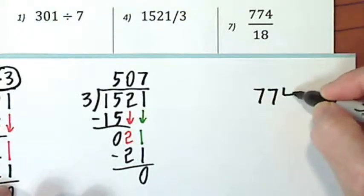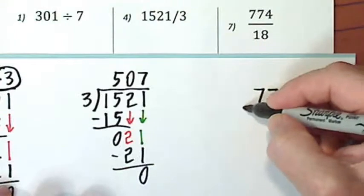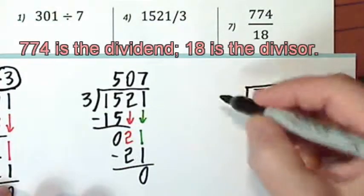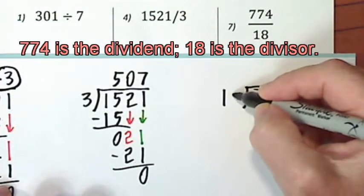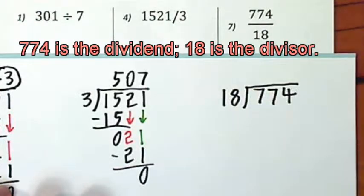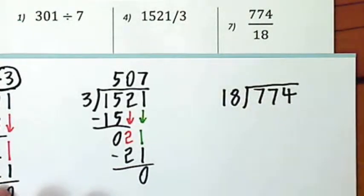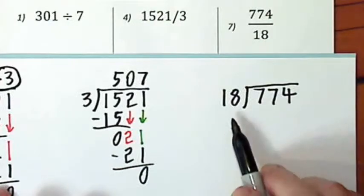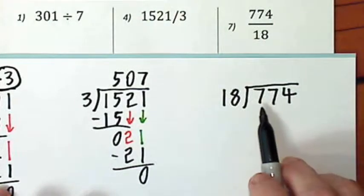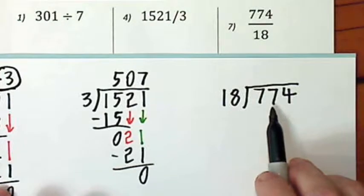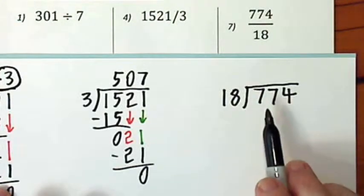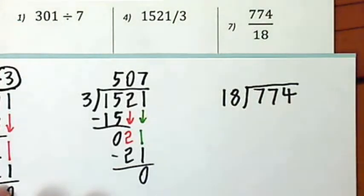Seven hundred seventy-four is the dividend. Eighteen is the divisor. And it's kind of hard to think of eighteen going into a number. But eighteen is close to twenty. Seventy-seven is close to eighty. Twenty goes into eighty four times. So we'll try a four.